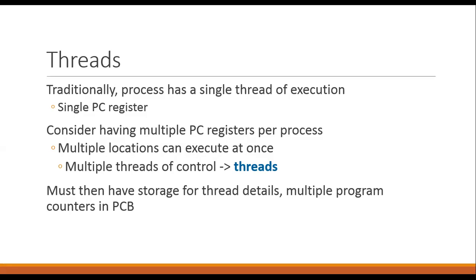However, consider having multiple program counter registers per process. If we are having multiple program counter registers against one process, then this means there will be multiple flows of execution within the program. That is, multiple sections can start executing concurrently. This is called a multi-threaded application. So, multiple threads of control define a multi-threaded application where a program can start execution at different locations concurrently.